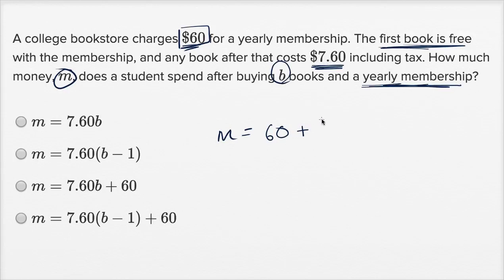So it might be tempting to say, I'm gonna do $7.60 per book, and then multiply that times B books. This right over here might be very tempting. We have to remember something. The first book is free.